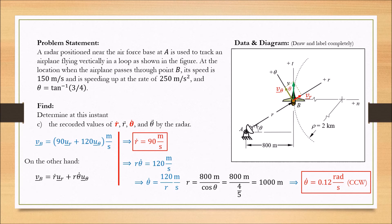Theta_dot is the angular velocity, sometimes called omega. The value of this angular velocity is positive, which means it is directed counterclockwise.